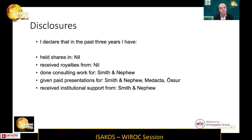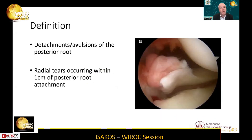These are my disclosures. Meniscal root tears have been defined as either detachments or avulsions of the posterior root of the meniscus, or radial tears occurring within a centimetre of the posterior root attachments.